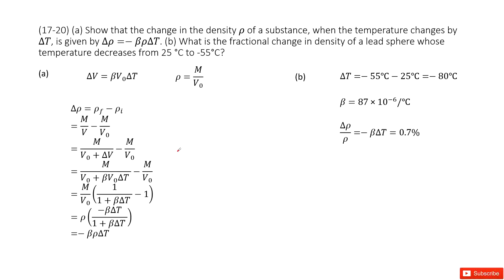Chapter 17 is about temperature, thermal expansion, and ideal gas volume. For this one, we need to prove the delta rho. This is the density changes with the temperature changes. We need to prove this function.